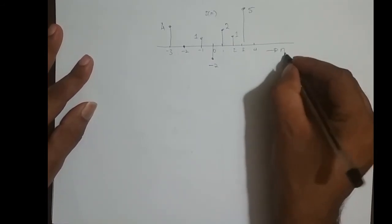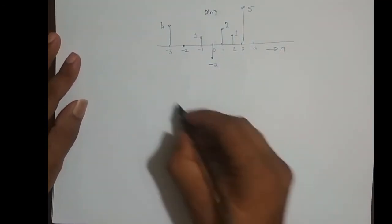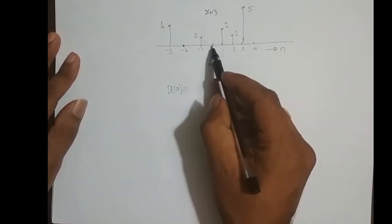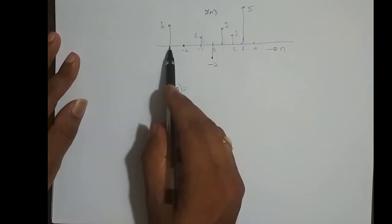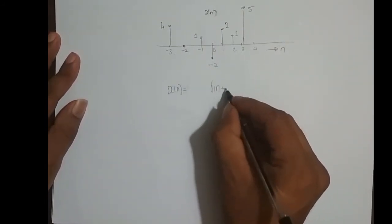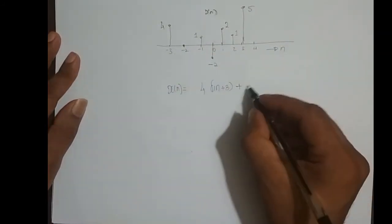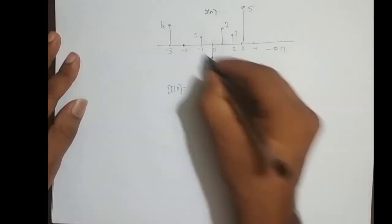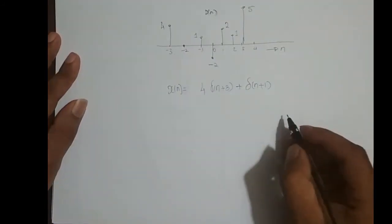I have just randomly plotted a sequence x of n. Now how do I represent this in terms of delta functions? I will start from the negative side of n. The first sample: how do I represent only this sample in terms of delta of n? It is delta of n shifted left 3 times — delta of n plus 3 — and its amplitude is scaled by a factor of 4. At n equal to minus 2 I have nothing so it is 0.